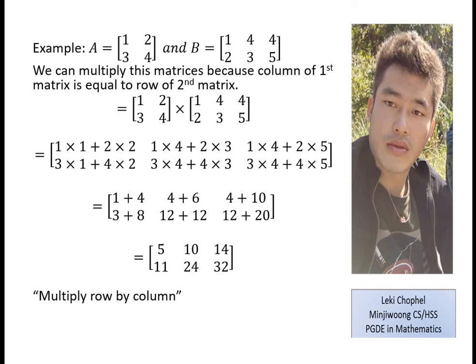That is how you multiply matrices — row by column. First multiply the row with all columns of the second matrix, then move to the next row. If you have any doubts, please let us solve questions in our regular classroom.